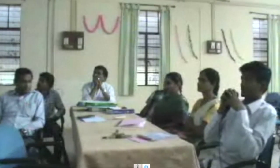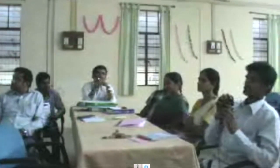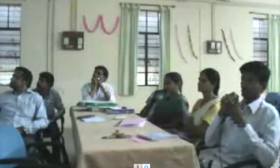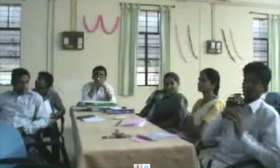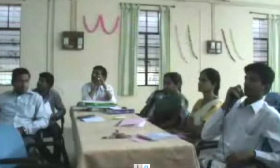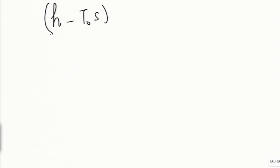A question regarding exergy: what happens to the exergy when a system undergoes a cyclic process? Exergy (flow exergy) is defined as H − T0·S. It is a property that depends on state and also on the environment temperature T0. When a system executes a cycle, it comes back to the same enthalpy, temperature, and entropy — hence the exergy change of a system after executing a complete cycle will be zero.